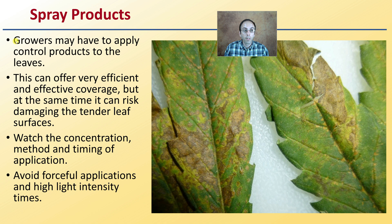Then we get to spray products. Growers may have to apply control products to their leaves. This can offer very efficient and effective coverage, but at the same time it can risk damaging tender leaf surfaces, particularly your newer leaves. Watch the concentration, method, and timing of your application. You want to avoid forceful applications at high light intensity times as well, to reduce the chance of grower-induced spray damage to your leaves.